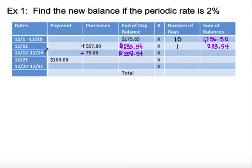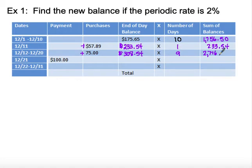Let's figure out how many days it's at that balance. Using the subtraction trick: 20 minus 12 is 8, but counting that first day makes it actually 9 days at that end-of-day balance. So we multiply $308.54 times 9, giving us $2,776.86.